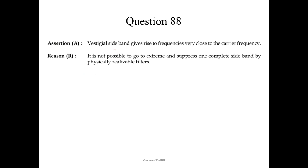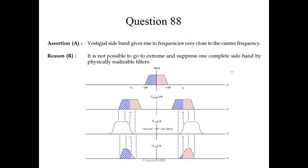Question 88. Assertion: vestigial sideband gives rise to frequencies very close to the carrier frequency — correct. Reason: it is not possible to go to the extreme and suppress one complete sideband by physically realizable filters — also correct. Both assertion and reason are true and the reason is the explanation of the assertion. So we choose option 1.